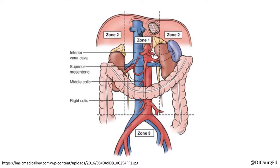Zone one is divided into a supra and inframesocolic region. The suprameso colic portion of zone one contains the suprarenal aorta, celiac axis, and proximal SMA and SMV.